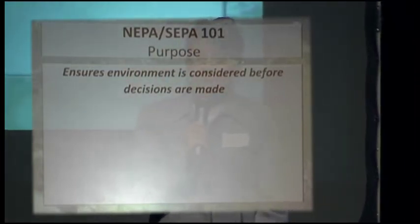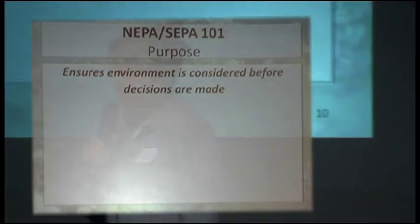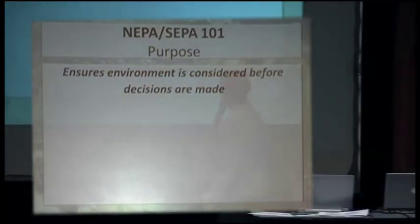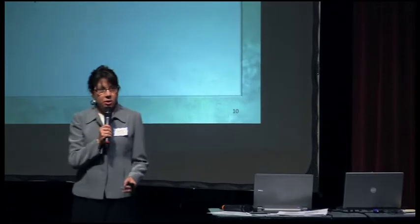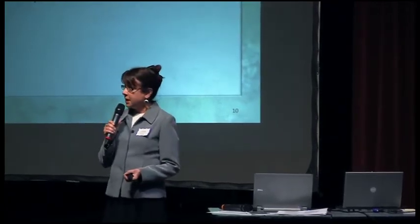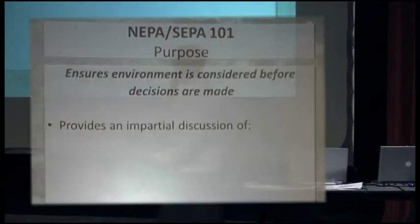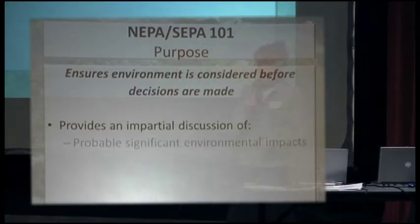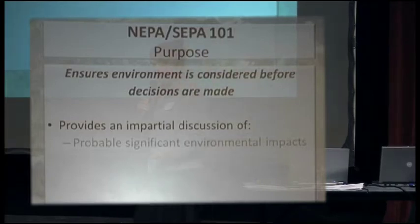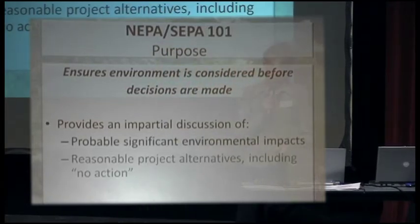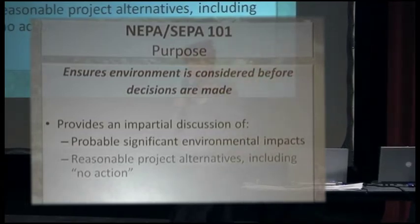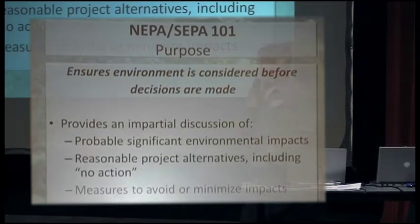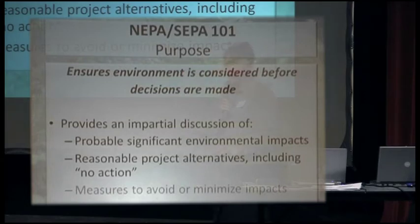What does it do? The bottom line is it ensures the environment is considered before decisions are made on a project. At the end of the process, you will have a document — the Environmental Impact Statement. It's a comprehensive document that will provide an impartial discussion of the probable significant impacts of a proposal, reasonable project alternatives including the no action alternative, and what measures could be taken to avoid or minimize the impacts of the proposal.